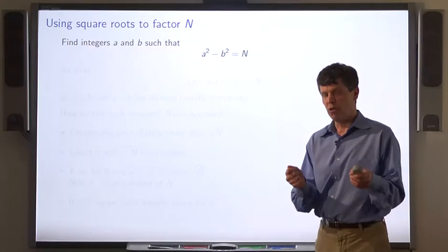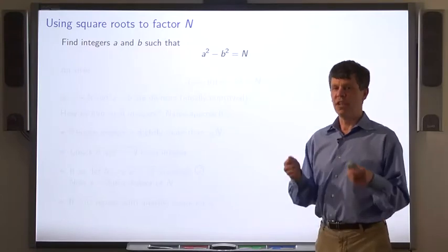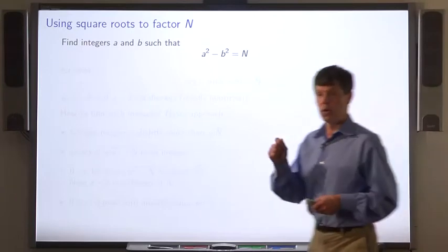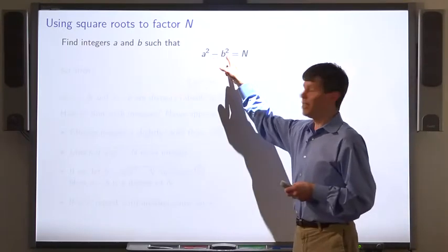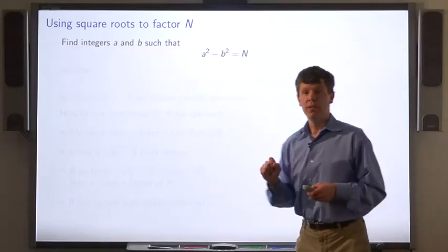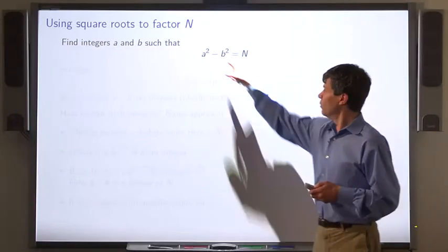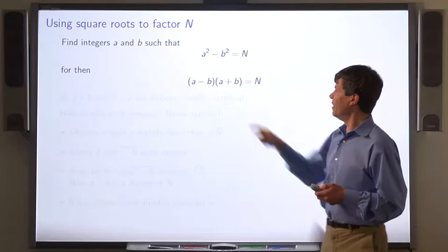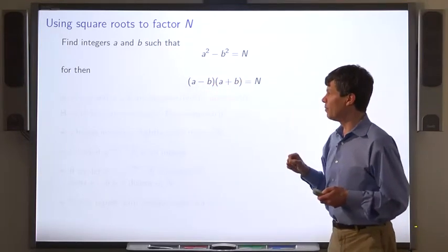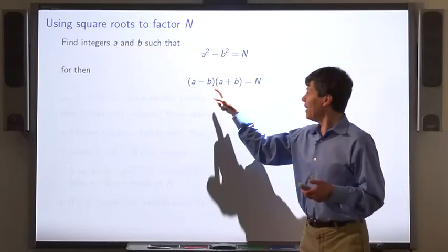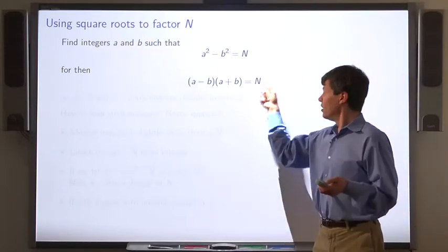Here's an approach to trying to factor a large number n. Try to find integers a and b such that a squared minus b squared equals the integer n. And we can factor the left hand side as a minus b times a plus b equals n. So in this case, a minus b and a plus b are evidently divisors of n.